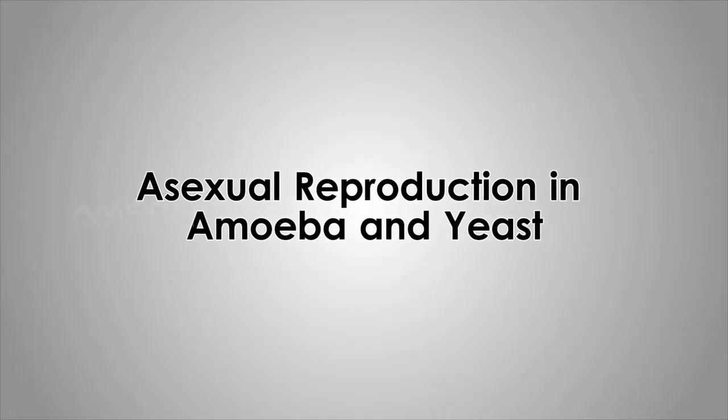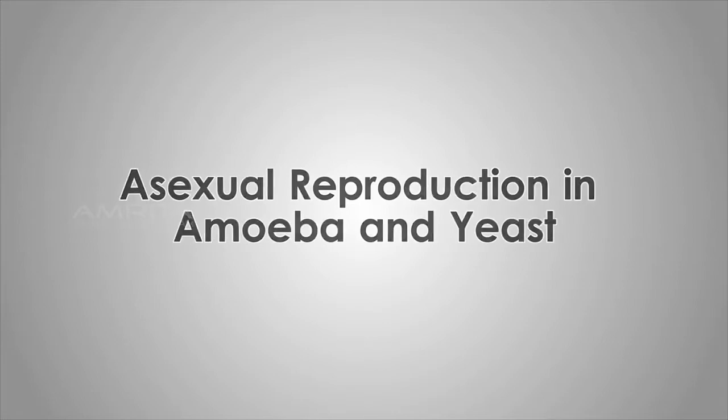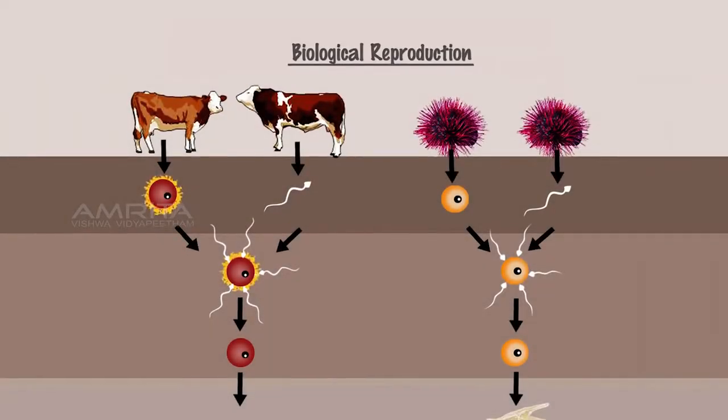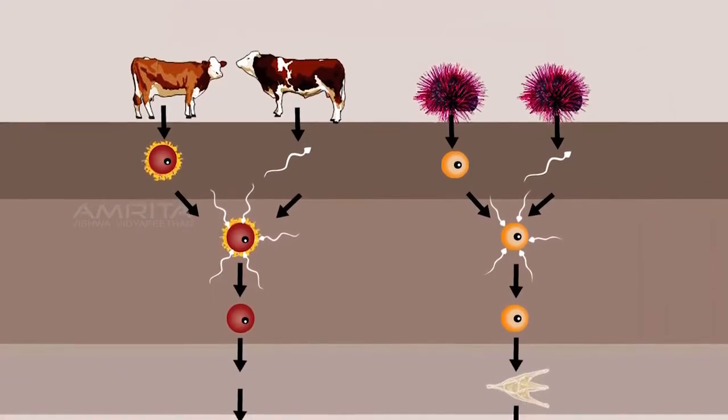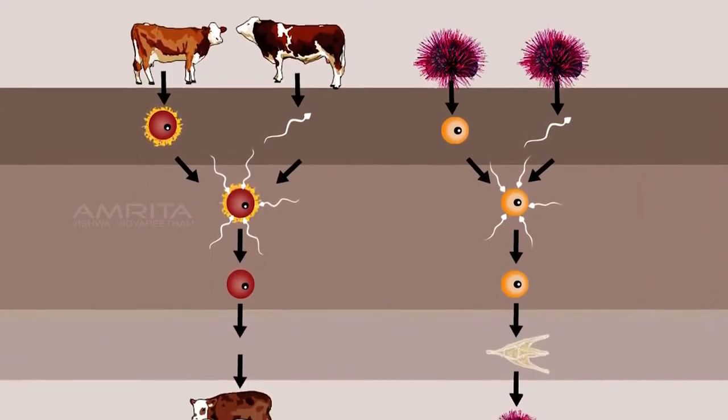Asexual Reproduction in Amoeba and Yeast. Reproduction is the biological process by which organisms produce new offspring.